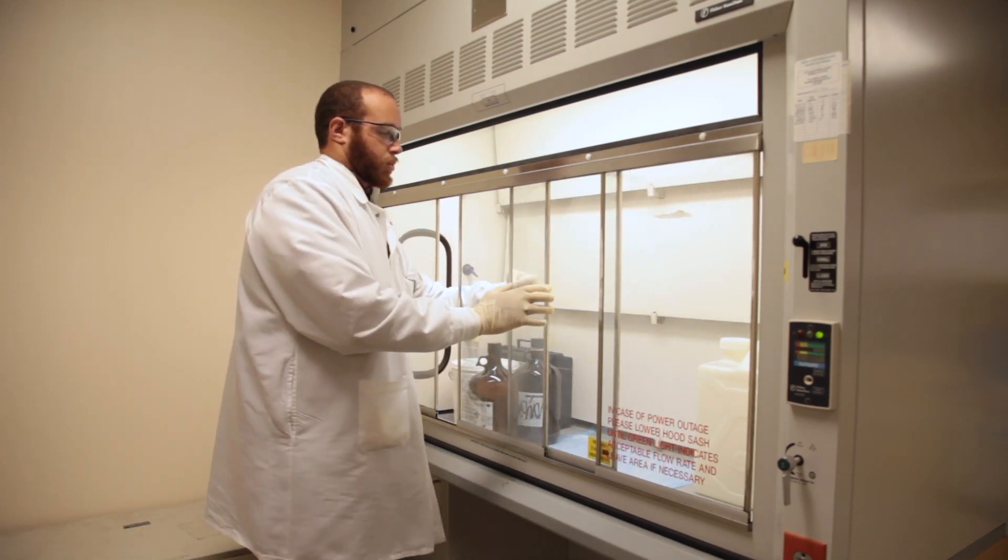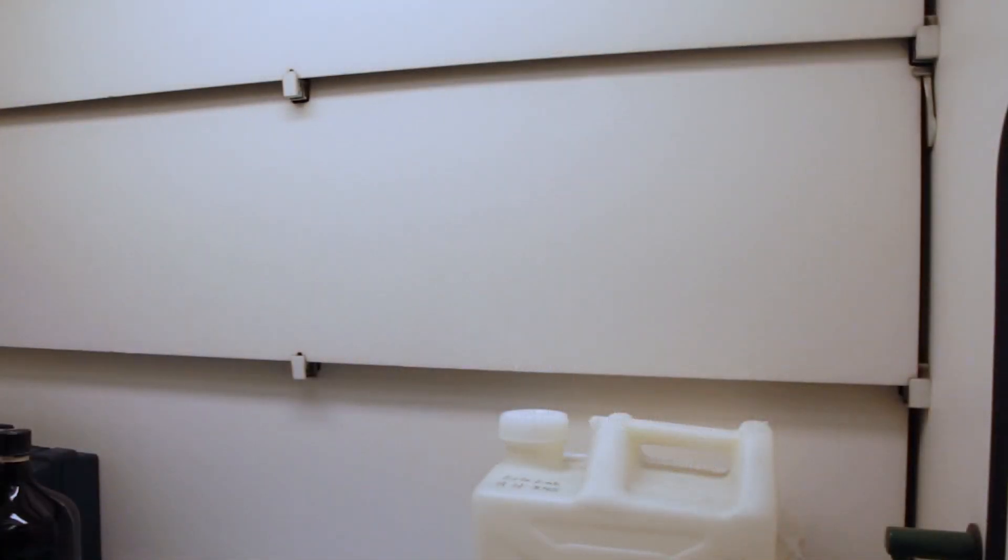Components for a fume hood include baffles, which are movable partitions used to create slotted openings along the back of the hood body to maintain uniform airflow.